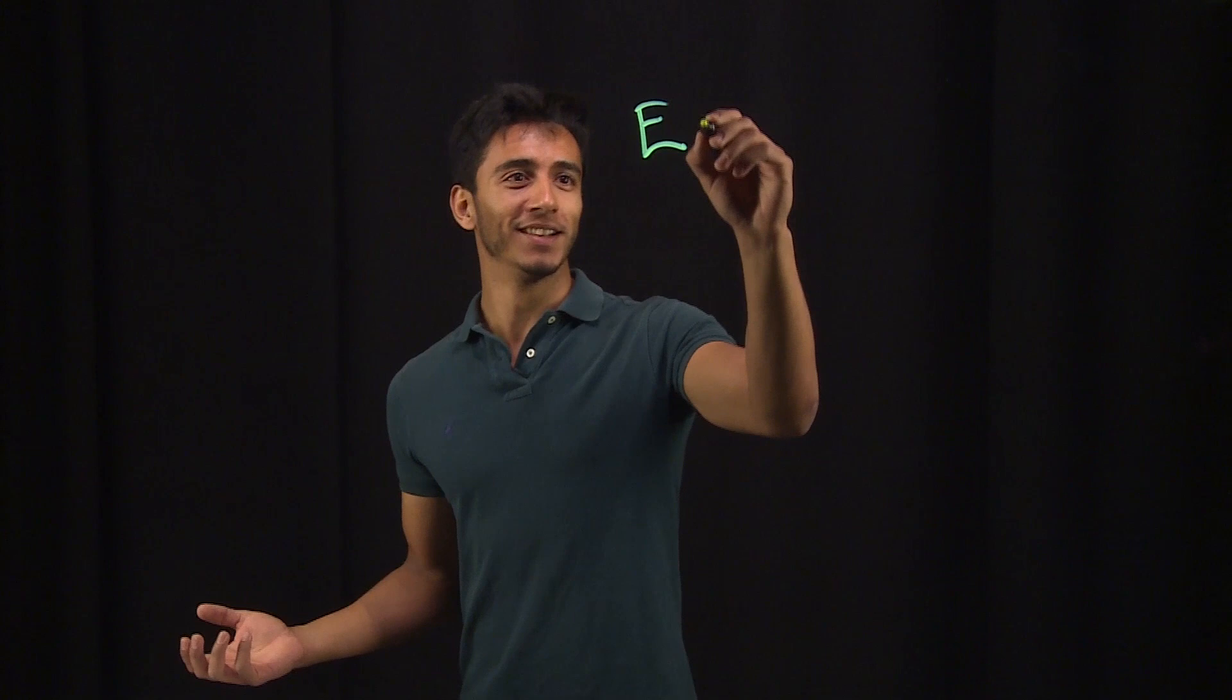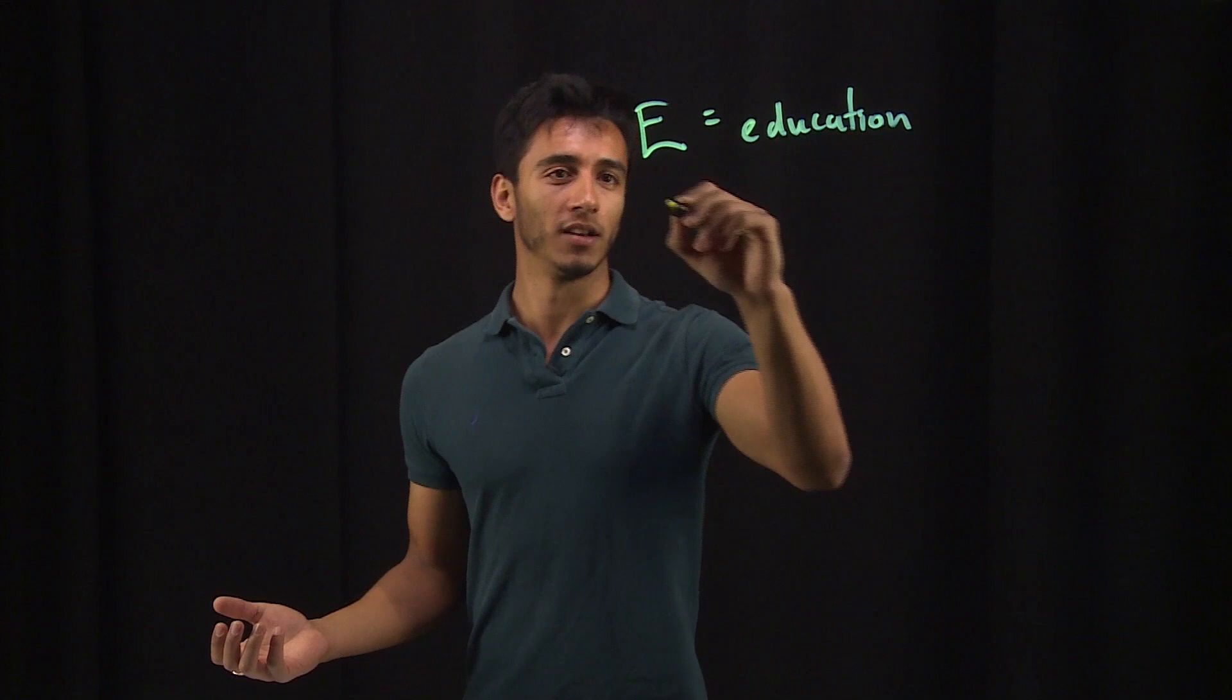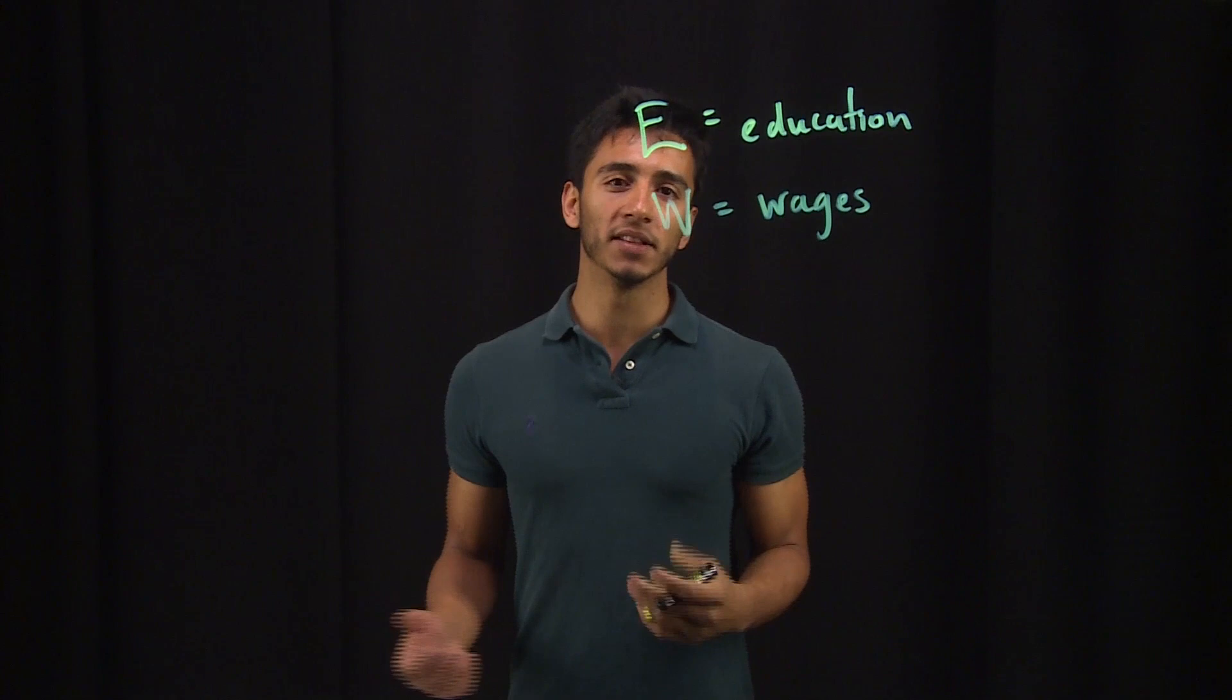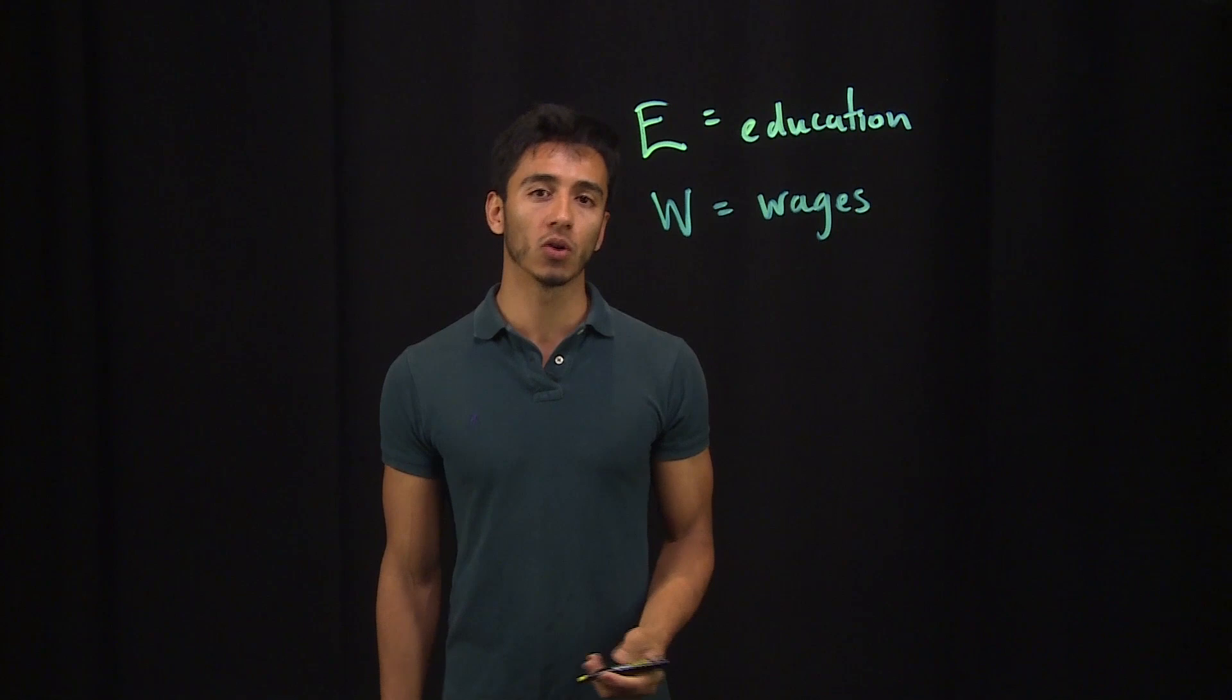So how much money are you going to make during your lifetime? How many years of education are you going to get? These two things are essentially random variables. E would be education and W would be wages. And in this course we will be understanding how these two are random variables and how wage is a function of education.